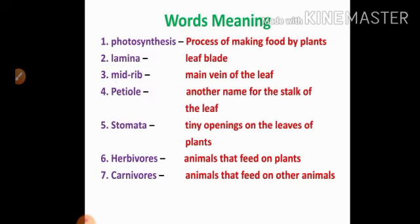Now the next one: word meanings. First one: photosynthesis. Photosynthesis means process of making food by plants. Second one: lamina. Lamina means leaf blade. Third one: midrib — main vein of the leaf. Fourth one: petiole. Petiole means another name for the stalk of the leaf.